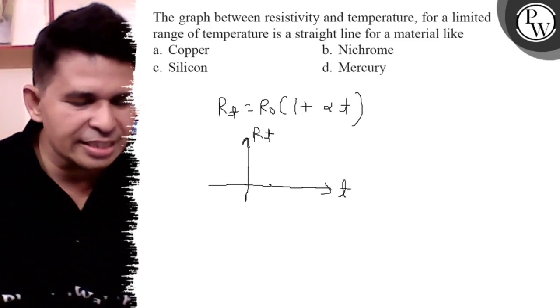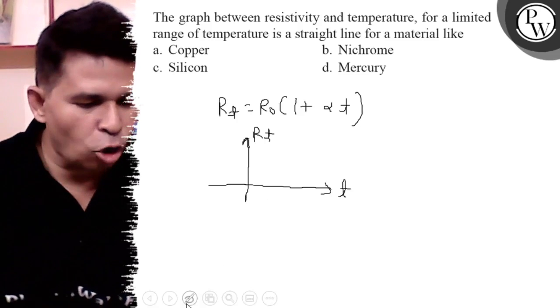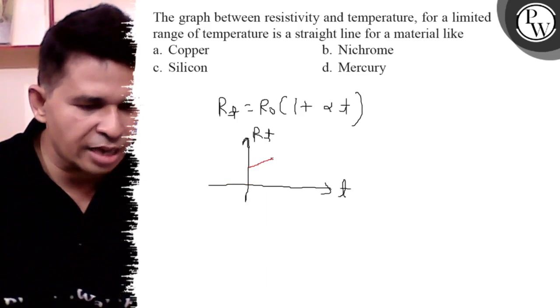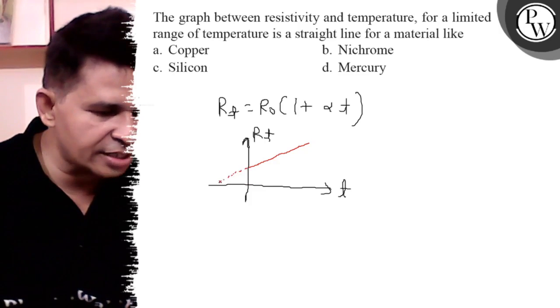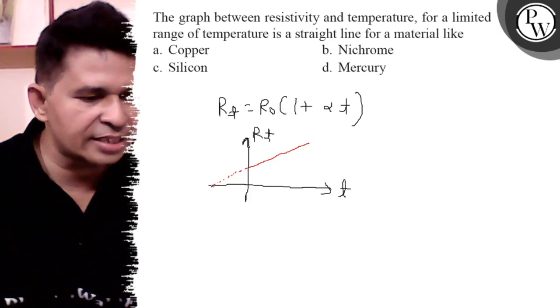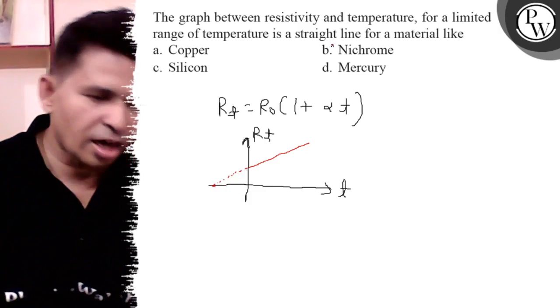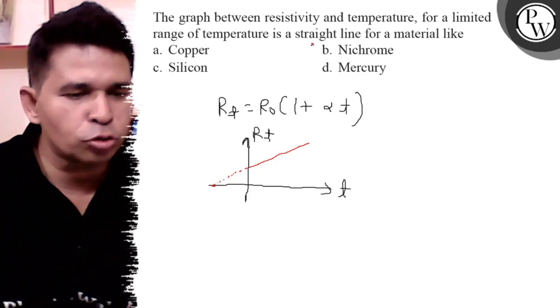At 0 degrees Celsius it is not zero, so definitely the graph is like that. And if you decrease the temperature from 0 degrees Celsius, it is zero at critical temperature and it occurs only for nichrome.